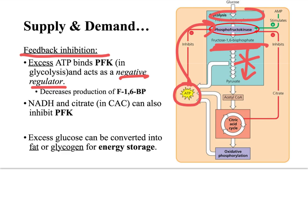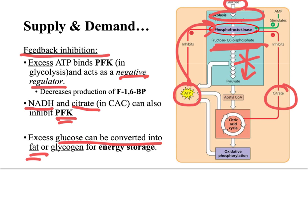Slowing down glycolysis means glucose can be converted to fat instead — fat is a high-energy molecule we'll discuss shortly. Glucose won't enter the citric acid cycle or electron transport chain. Citrate and NADH from the citric acid cycle can also inhibit PFK, making this step in glycolysis a really important site for feedback regulation — specifically negative regulation.